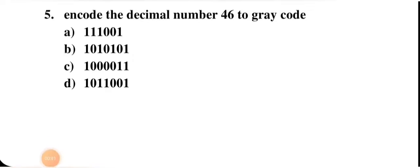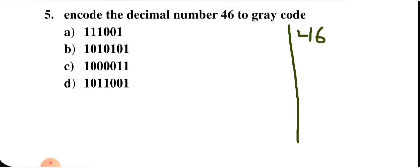Next question: encode the decimal number 46 to Gray code. First, we convert 46 to binary using successive division by 2.